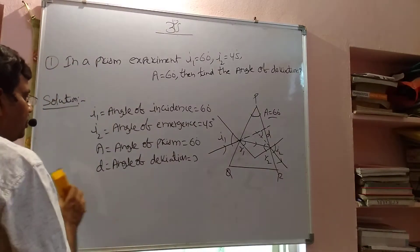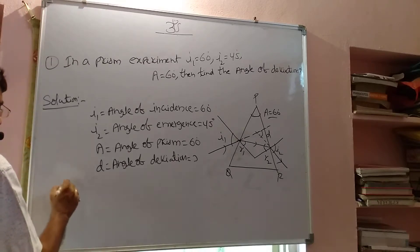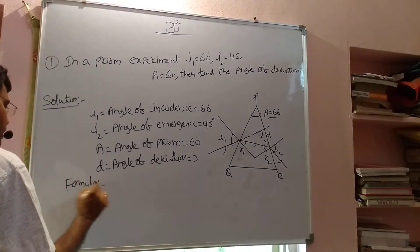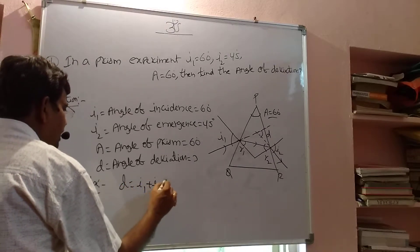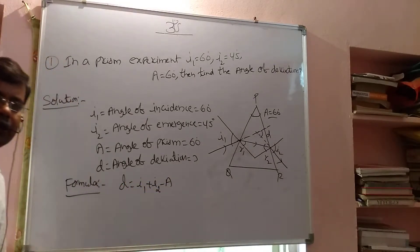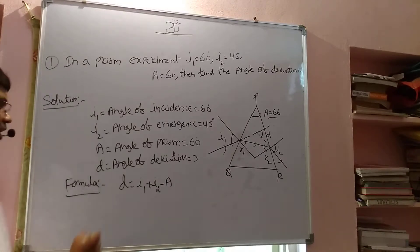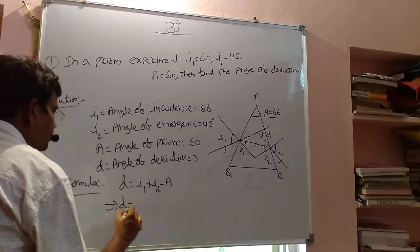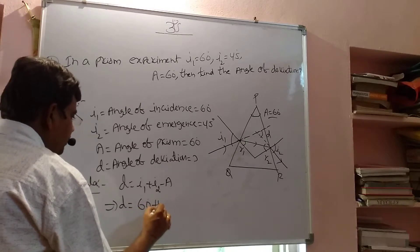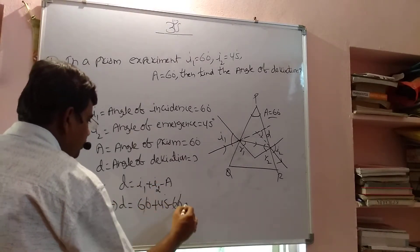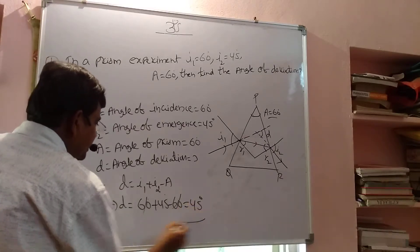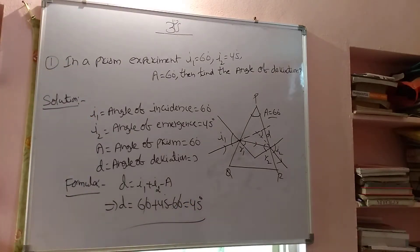Now apply the formula. The formula for angle of deviation is: D equals I1 plus I2 minus A. So, D equals 60 degrees plus 45 degrees minus 60 degrees, which gives 45 degrees. That is the angle of deviation. In this way, we solve problems related to prisms.